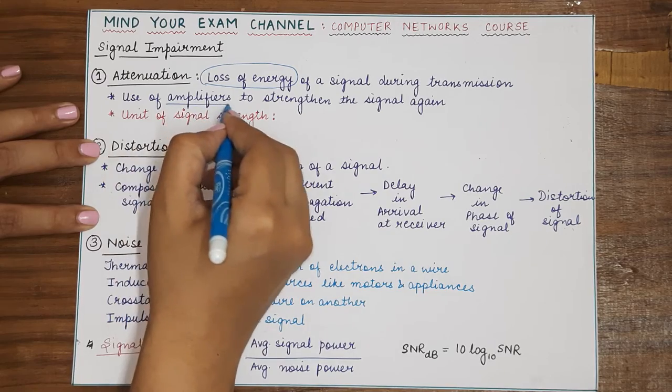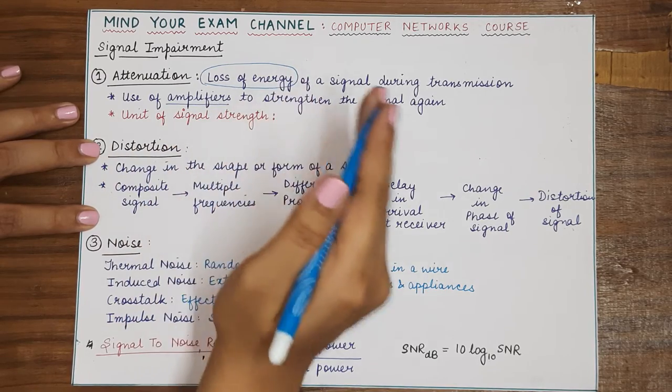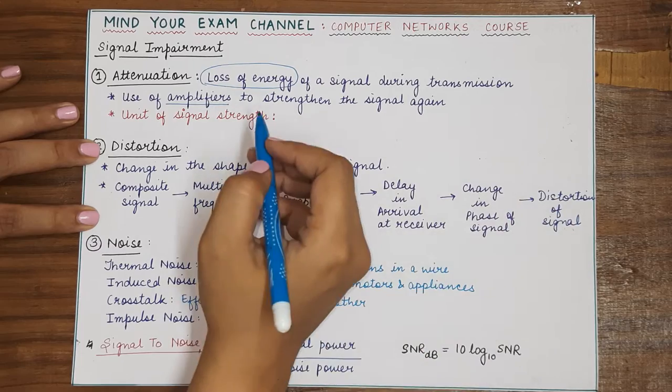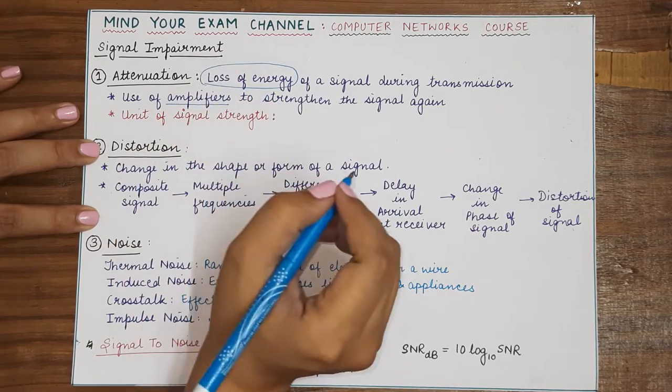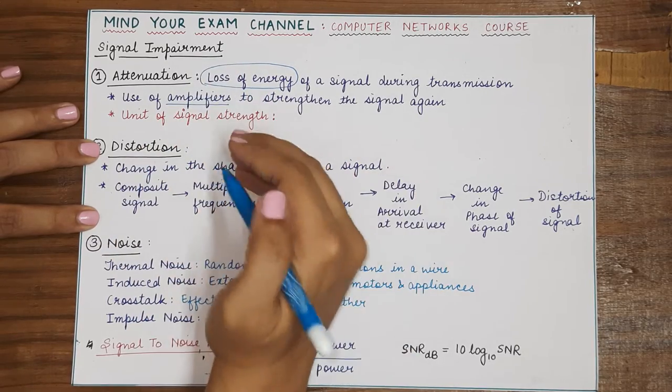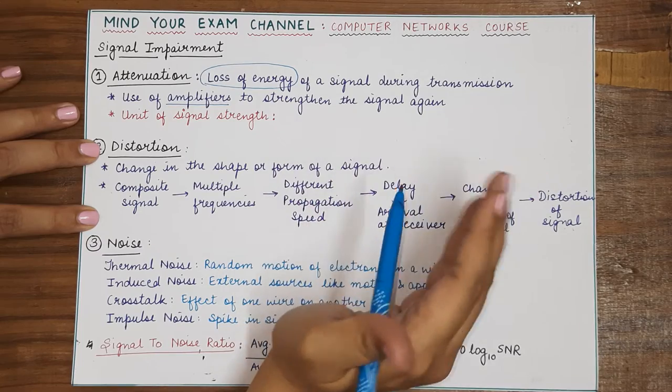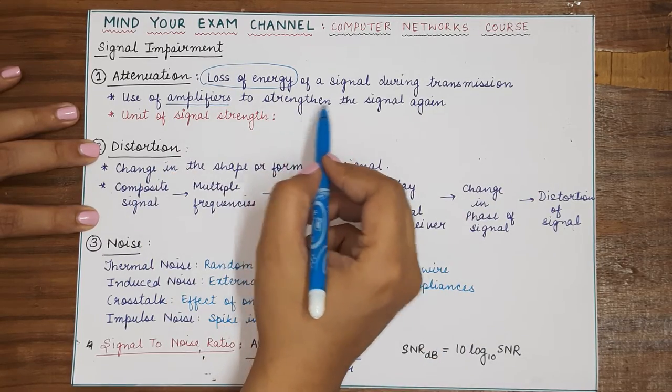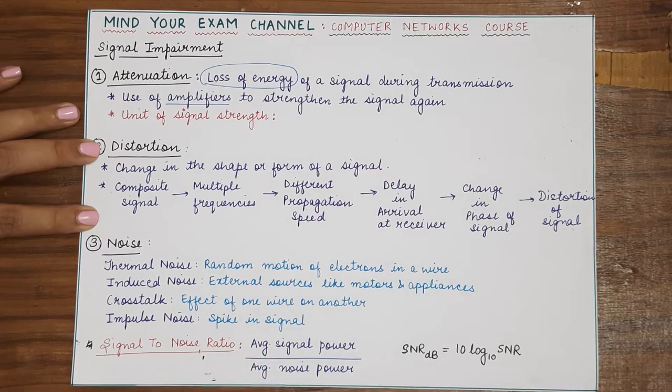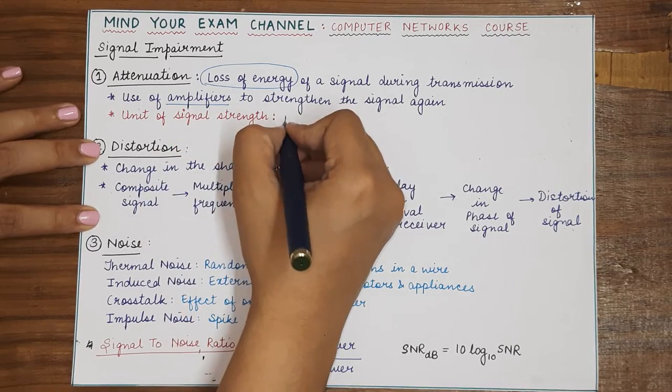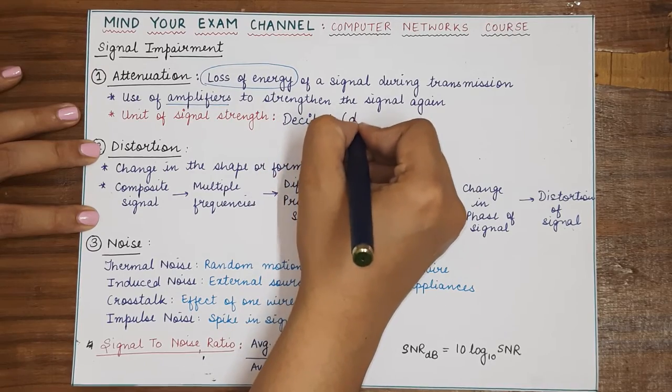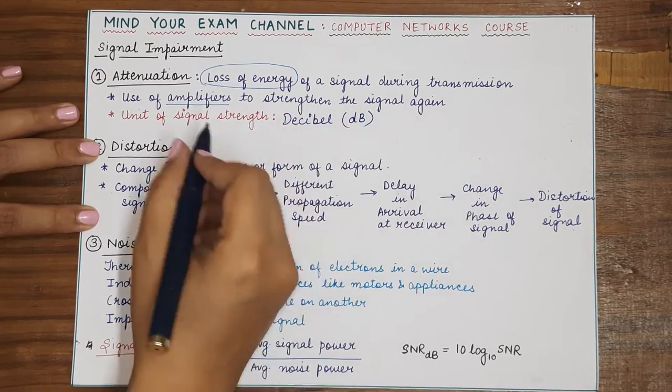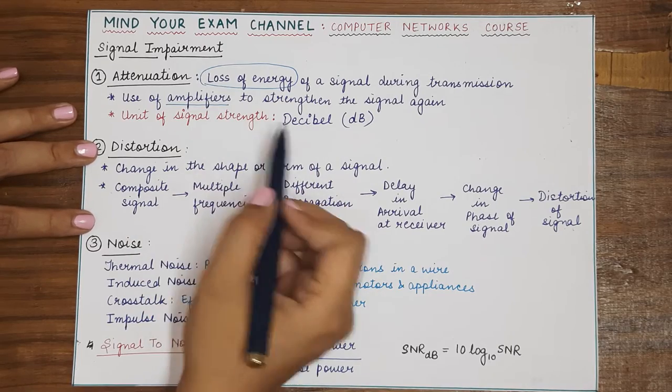Therefore, amplifiers are the devices that are used at regular intervals so that if the signal becomes weak, the amplifier restores the signal to its original strength and then forwards it throughout the remaining distance. So amplifiers are used to strengthen the signal again during transmission and you must remember that the unit of signal strength that we use to measure is known as decibel which is also written as dB. So decibel is the unit in which you will measure signal strength.